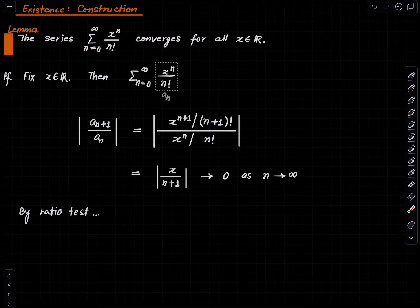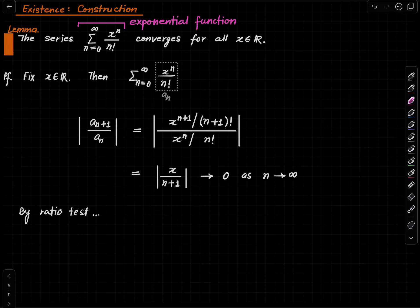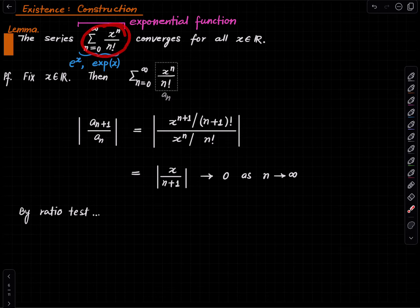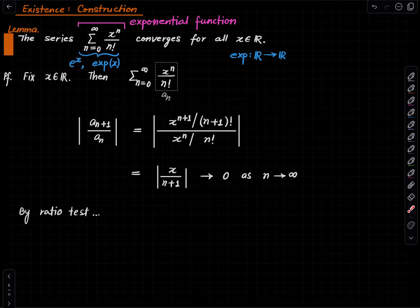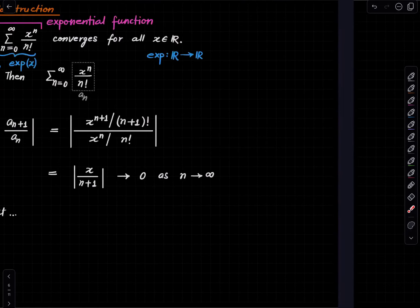So the function we were dreaming of actually exists, and we have already shown it is unique. This is called the exponential function. The expression Σ xⁿ/n! is denoted eˣ or exp(x) — both are notations for the same thing. The exponential function is therefore exp : ℝ → ℝ, where exp(x) = eˣ. That is all for this lecture — like, comment, share, subscribe, and I will see you next time.